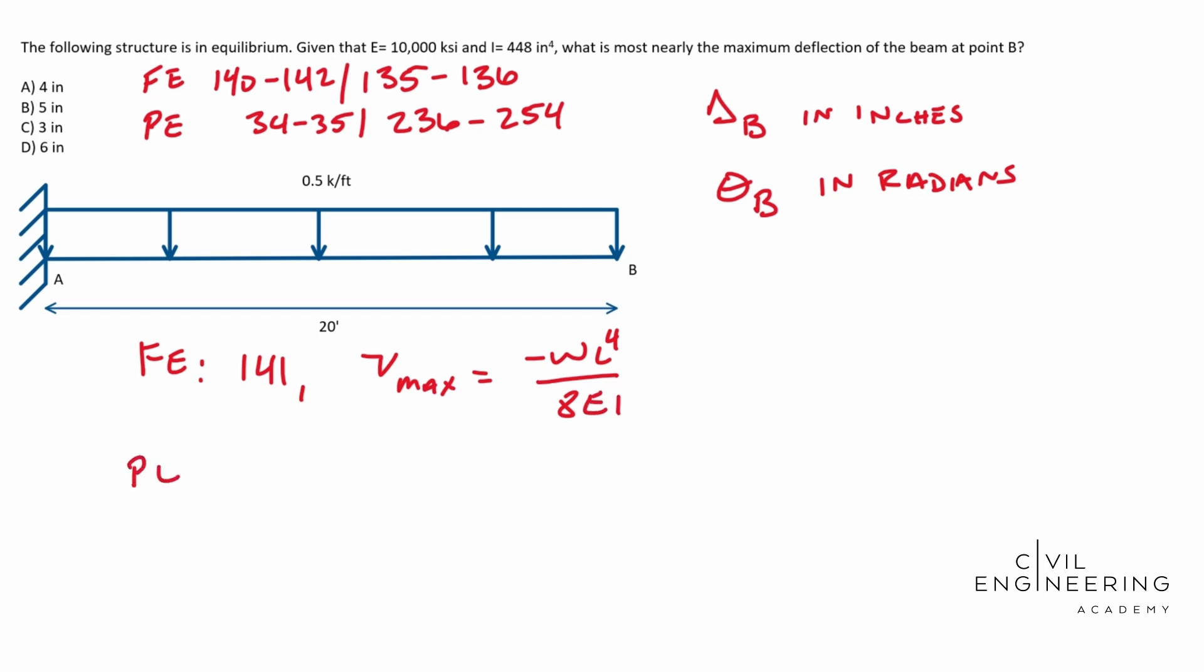Whereas in the PE, on page 244, the delta max is WL to the 4th over 8EI. They also have it on page 35 as well. Same deal. They show it as negative WL to the 4th over 8EI. Doesn't really matter, positive versus negative.